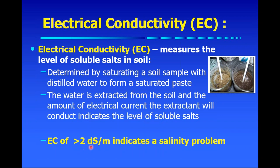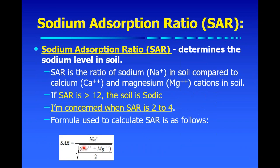The units usually used by the lab are deci Siemens per meter (dS/m) — simply a measure of electricity, and the greater this number, the greater the salinity problem. As soon as you see a number of two, that would indicate you have a slight salinity problem. The higher the number, the greater the salinity problem.